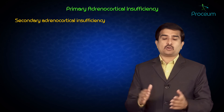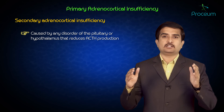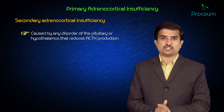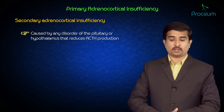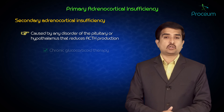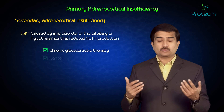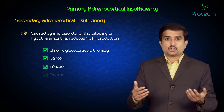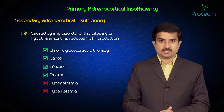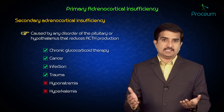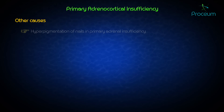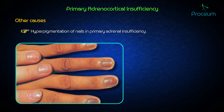Secondary adrenocortical insufficiency can be caused by any disorder of the pituitary or hypothalamus that reduces ACTH production, such as chronic glucocorticoid therapy, cancer, infection, or trauma. In secondary adrenocortical insufficiency, hyponatremia and hyperkalemia are not seen. Hyperpigmentation of the nails is especially seen in primary adrenal insufficiency.